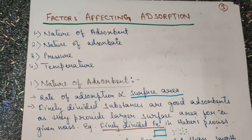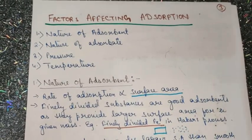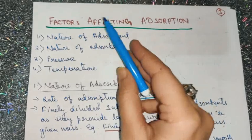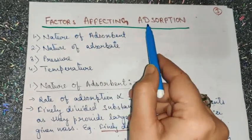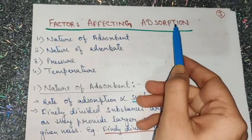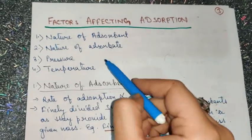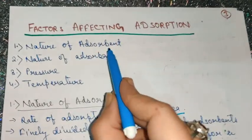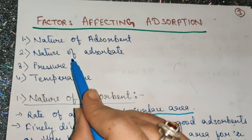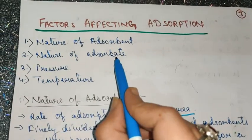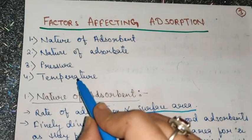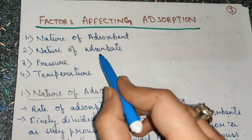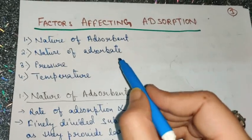In today's session, that is the third session, I am proceeding further with another important topic: factors affecting the rate of adsorption. The four factors which affect the rate of adsorption are nature of the adsorbent, nature of the adsorbate, pressure, and temperature.